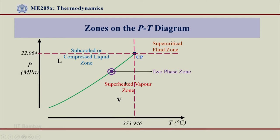If a system lies on this LV saturation line, we know that it is in a two-phase zone — it could be saturated liquid, saturated vapor, or two phases in equilibrium. So the three main zones are: sub-cooled/compressed liquid zone, superheated vapor zone, and supercritical fluid zone.